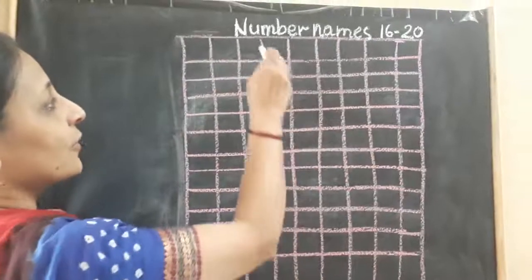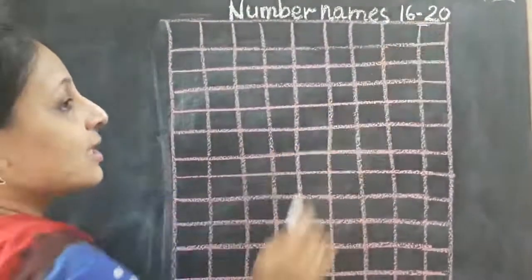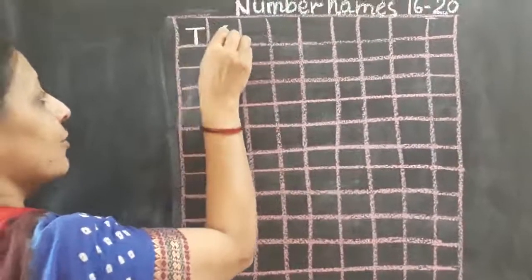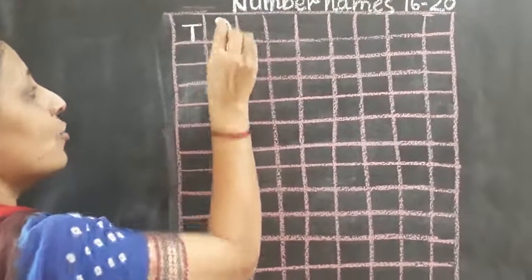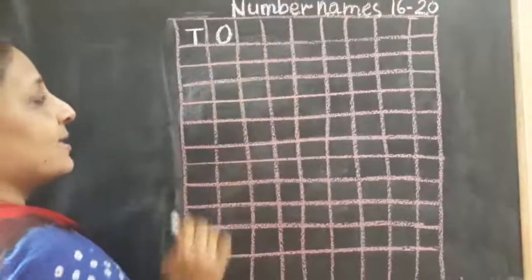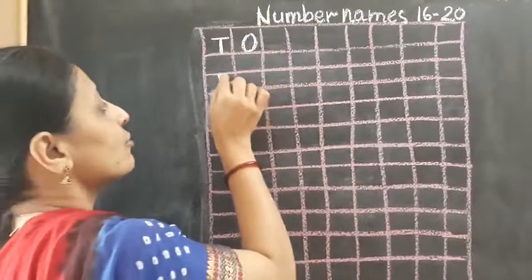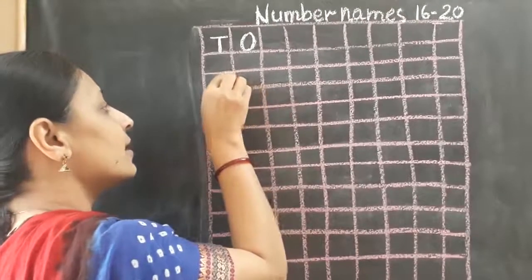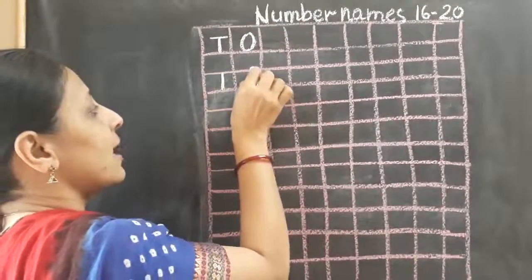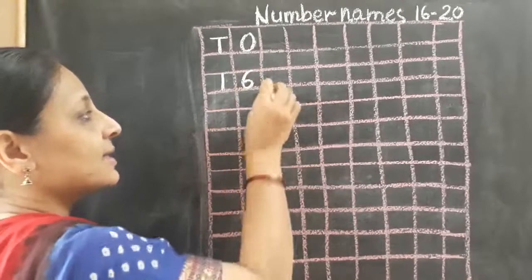Now children, first of all, you are going to write number names 16 to 20 as heading. And now I am going to write T and O. As you already know, T represents tens and O represents ones. Now, we are going to write numbers under T and O box. So here I am going to write number 16.